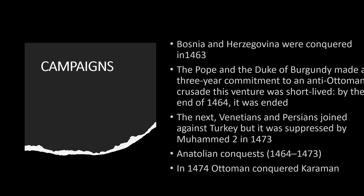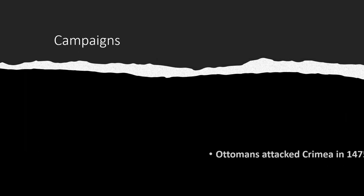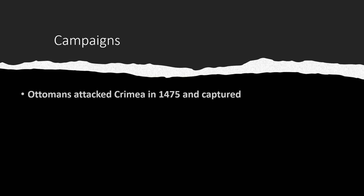In 1474, the Ottoman Empire conquered the neighboring Karaman dynasty, which was also a Muslim dynasty. They had been fighting against the Ottoman Empire for a long time, and Muhammad al-Fatih conquered them completely in 1474. In 1475, the Ottoman Empire attacked Crimea and captured it, and that same year started a campaign against Moldavia, capturing it in 1476.